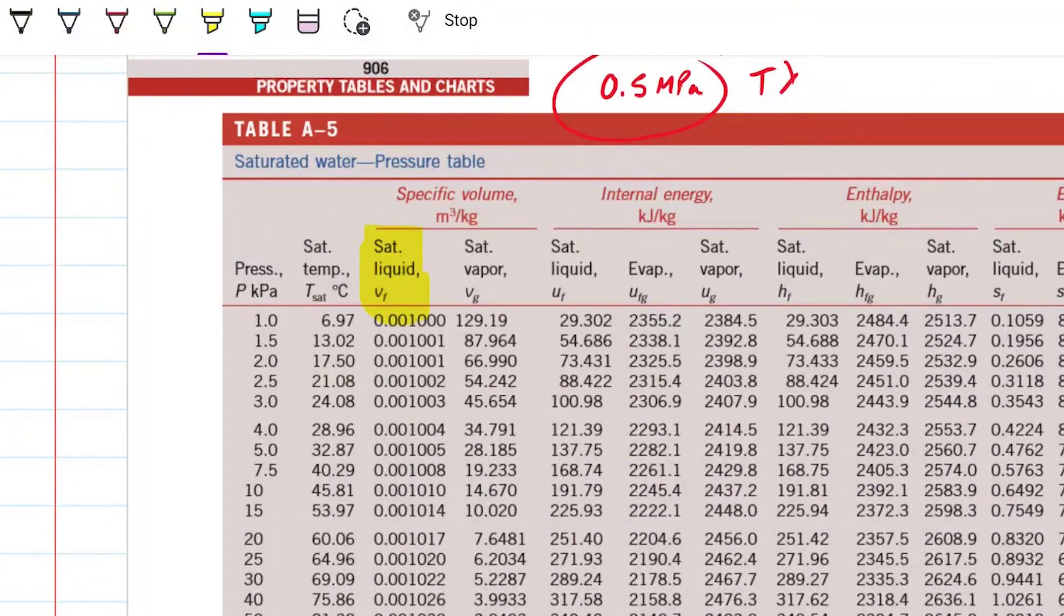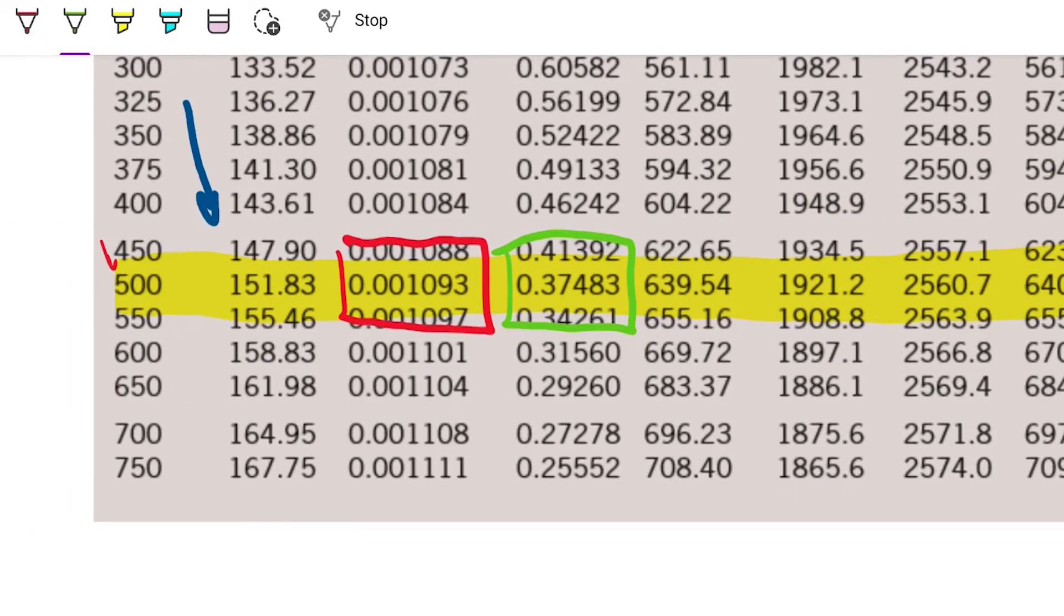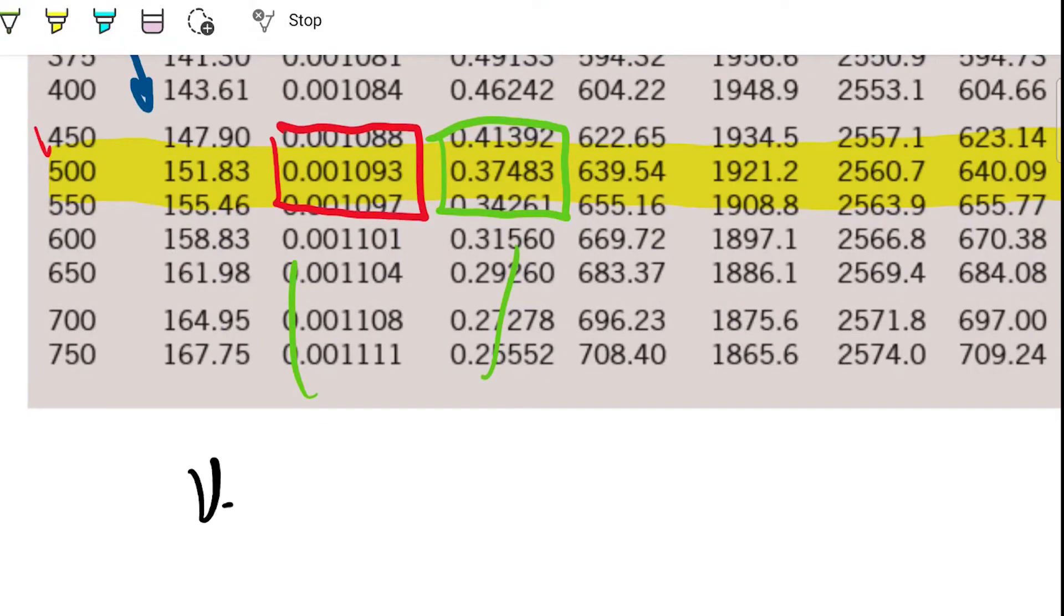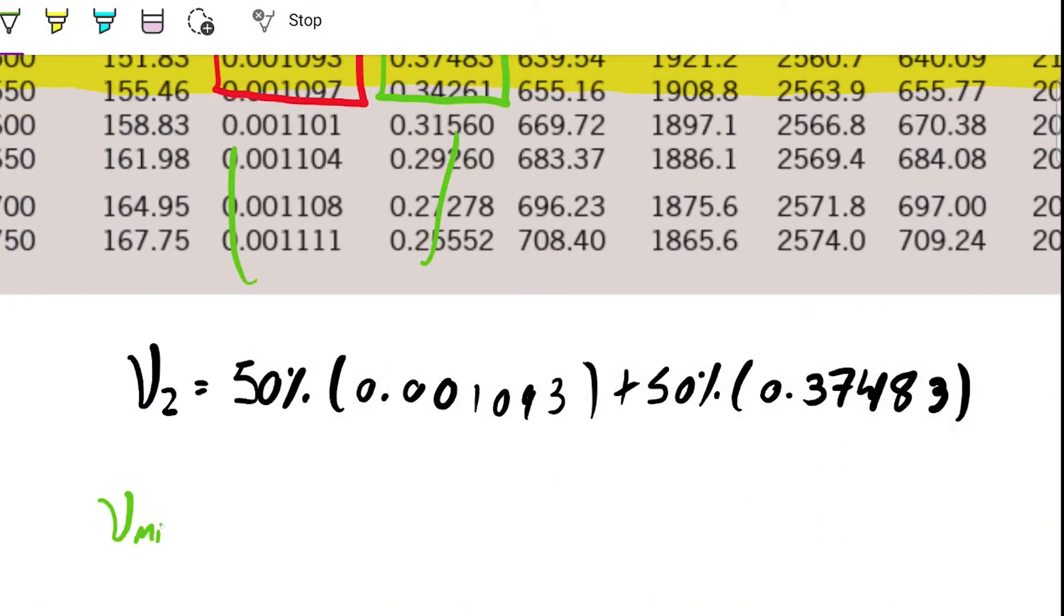Remember that the second state is defined as having a 0.5 megapascal pressure and 50-50 in relationship to liquid and vapor. This is the saturated liquid value. This is the saturated vapor value right here. In other words, if we were to have 100% of liquid, this would be our specific volume. If we were to have 100% of vapor, this would be our specific volume. Because we have 50-50, I'm going to get 50% of this, 50% of this, combine the two, that's going to be my specific volume. So specific volume 2 will be equal to 50% of 0.00193 plus 50% of 0.37483. And we generalize this when we're doing this for other problems. We just say that if it's a mixture, it's going to be the quality, which is the amount of vapor we have times the specific volume for the saturated vapor, plus whatever is not vapor, which has to be liquid, times the specific volume for the saturated liquid. In this case, it happens to be 50%. So this is also 50%.